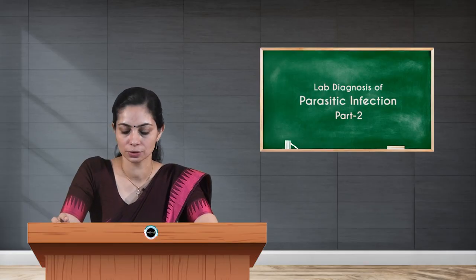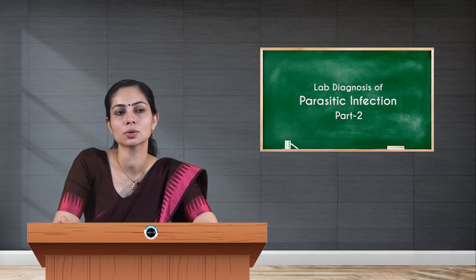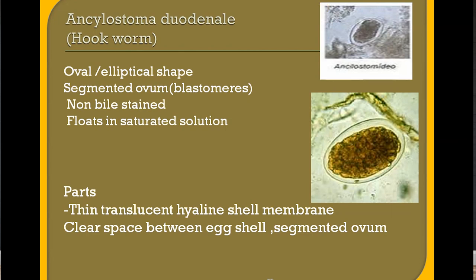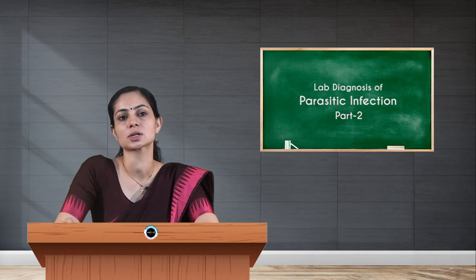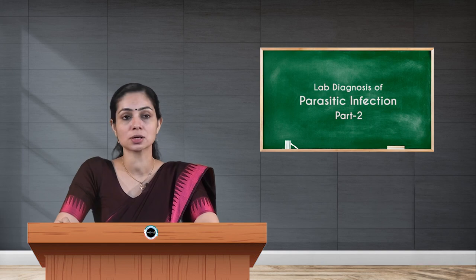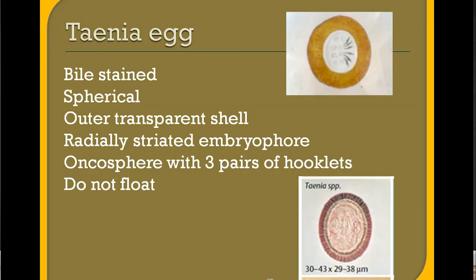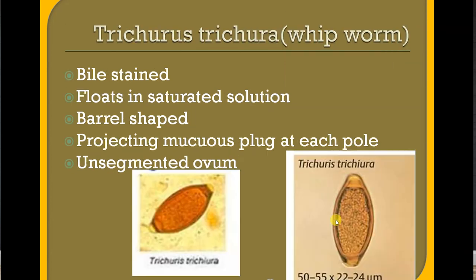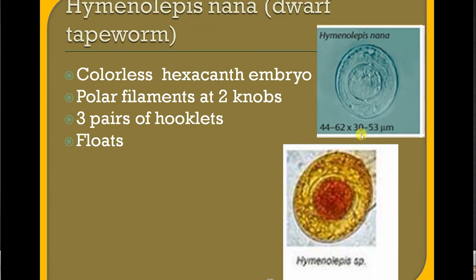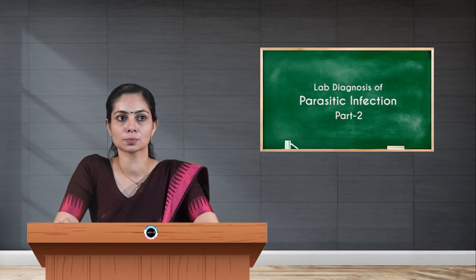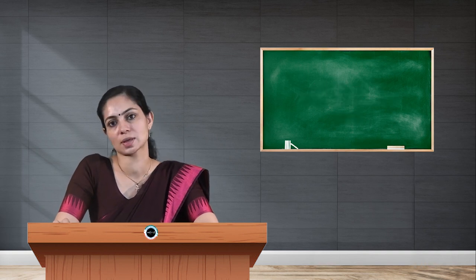In hookworm (Ancylostoma duodenale) infection, we find an oval or elliptical egg with a segmented ovum showing blastomeres in the center. The egg is non-bile stained and floats in saturated solution. It has a thin translucent hyaline shell with a clear space between the eggshell and the segmented ovum. Taenia eggs are bile-stained, spherical, with an outer transparent shell, radially striated embryophore, and an oncosphere with three pairs of hooklets — they do not float. Other eggs include Trichuris trichiura (whipworm), Enterobius vermicularis with larval stage, and Hymenolepis nana (dwarf tapeworm).